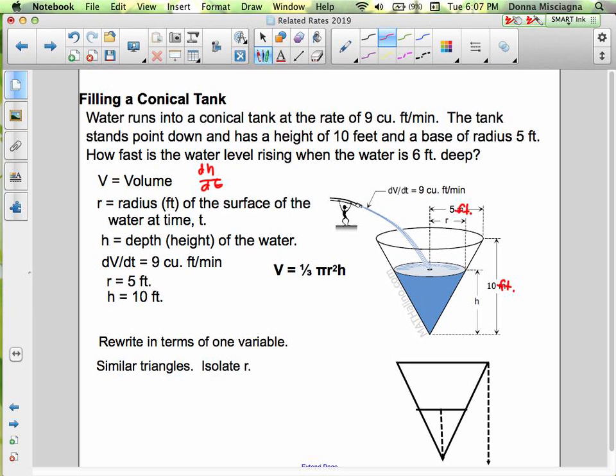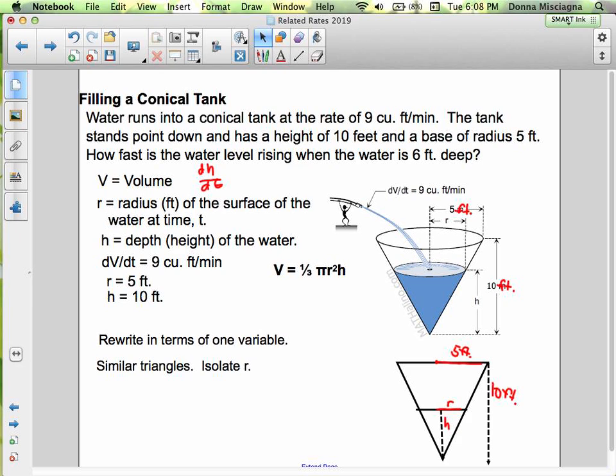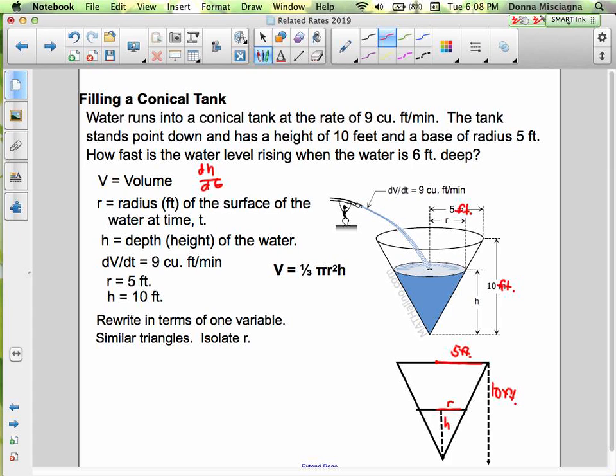The height of the actual tank is 10, but that's not the height we're interested in. Let's just call that h. The radius of the tank is 5 feet, but that's not the radius we're interested in. Let's call this r. Because our tank is not all the way full when we are determining how fast the water level is rising. We're going to rewrite in terms of one variable. These are similar triangles. As r increases, so does h.